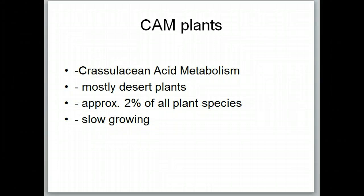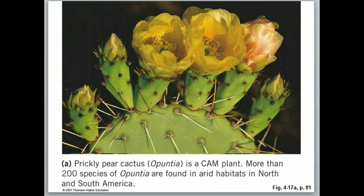These CAM plants are mainly desert plants, and they account for about 2% of all plant species. One of the characteristics of CAM plants is that they are very slow growing. In the environment where they grow, they don't have to compete with other things like kudzu and Bermuda grass. What they have to do is survive in that very dry, hostile environment. An example of a CAM plant is the prickly pear cactus — slow growing, but able to survive in that dry desert environment.